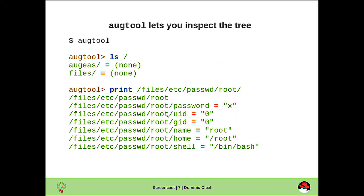The augtool command is the best way to get started with Augeas. It allows you to explore the tree, test out expressions, and also modify files. We see here we're listing the root of the Augeas tree — we have Augeas metadata and the files we mentioned earlier.